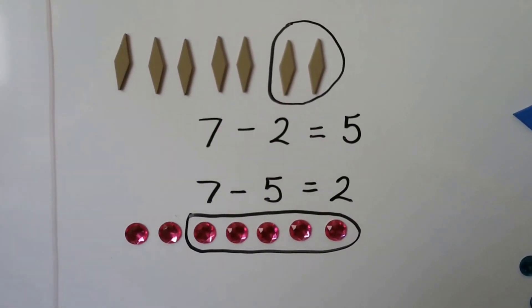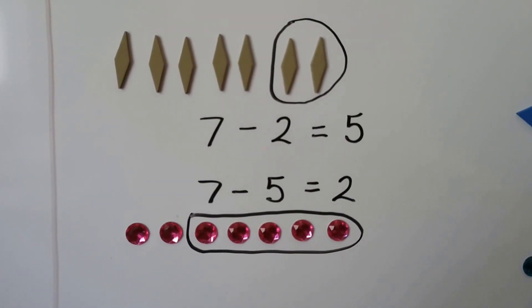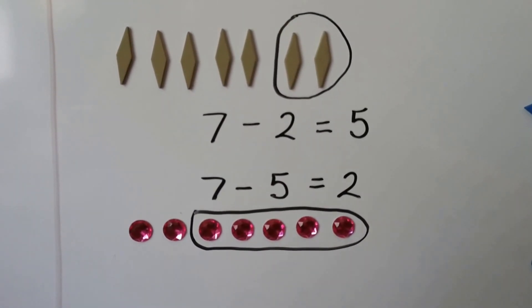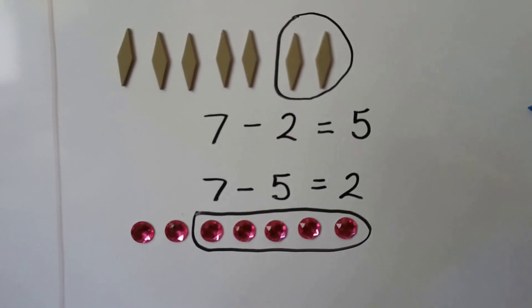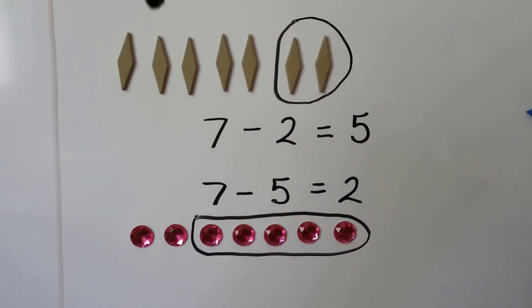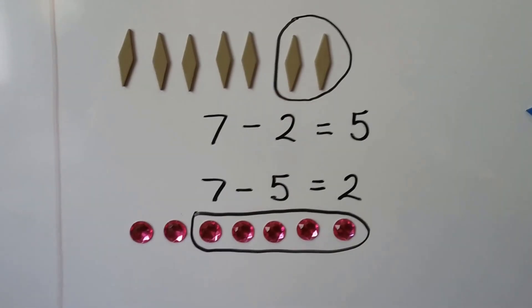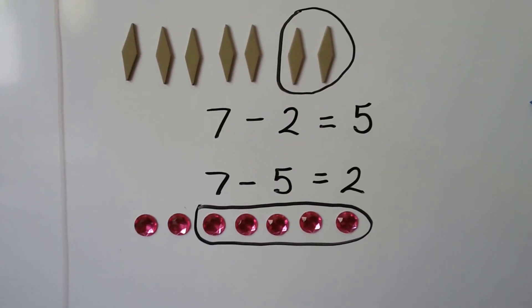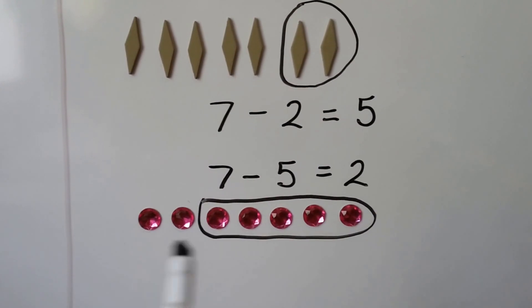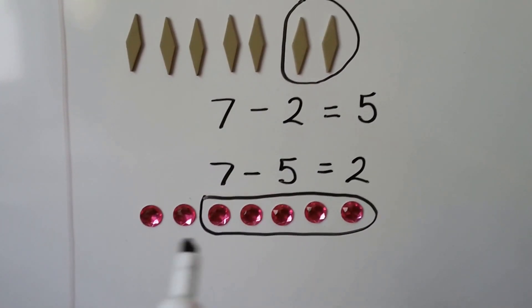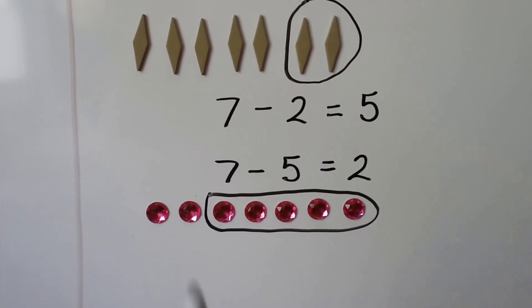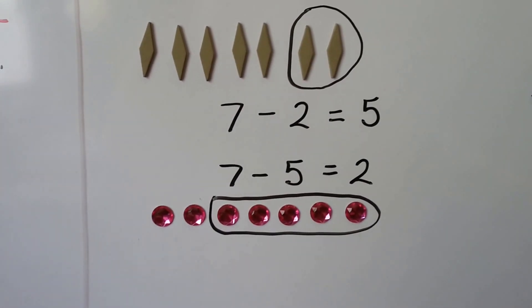If we have 7 diamonds and we take 2 away, we're going to have 5 left. We can count them: 1, 2, 3, 4, 5 left. 7 minus 2 equals 5. If we have 7 gems and we take 5 away, we'll have 2 left: 1, 2. 7 minus 5 equals 2.